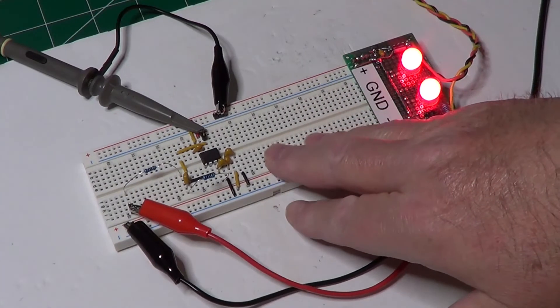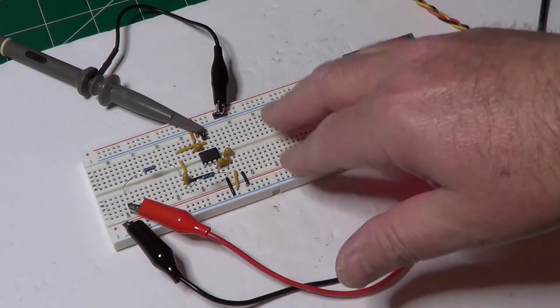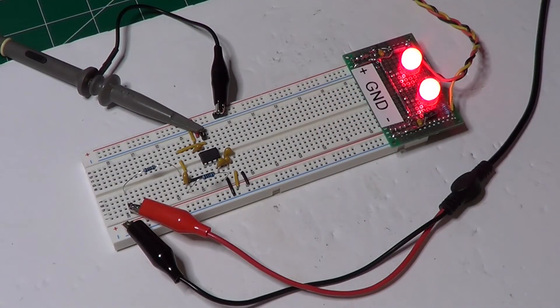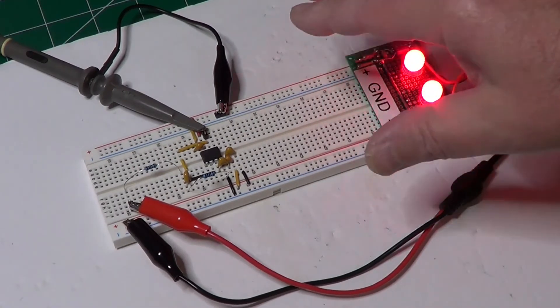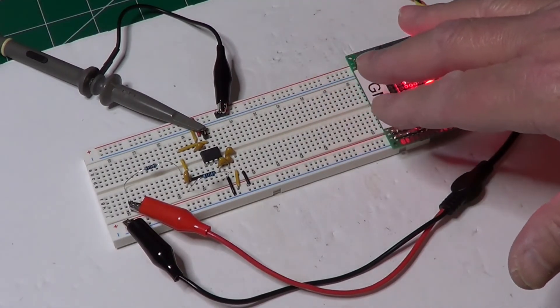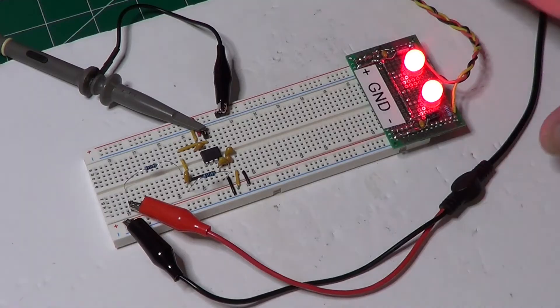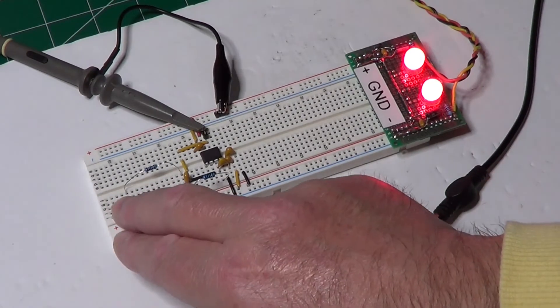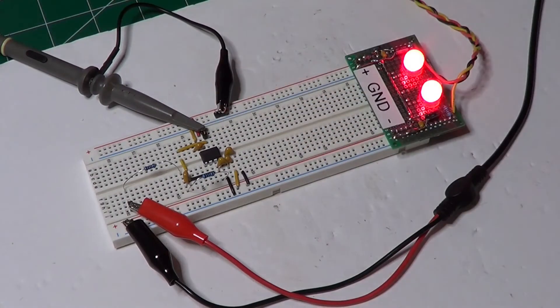Here's the low-pass Sallen-Key filter that I built, based on the calculations that we have done, to have a frequency of 18 kHz, a cutoff frequency of 18 kHz, and a Q of 0.8. I have connected my function generator on the input of the filter, and the oscilloscope on the output. Let's take a look at the two components.